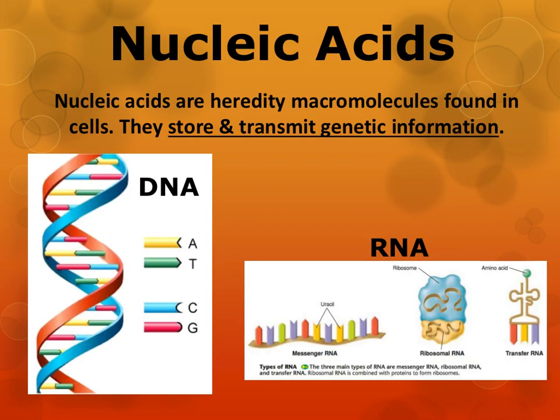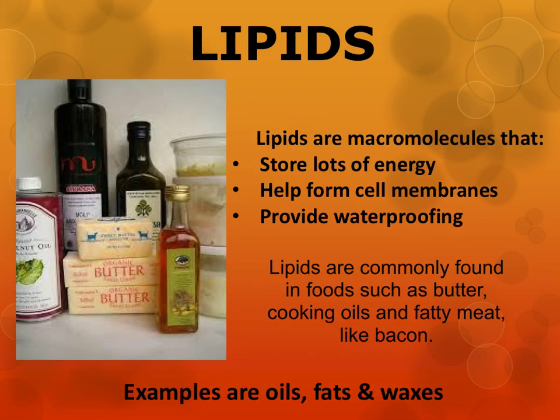Nucleic acids such as DNA and RNA are heredity molecules. In other words, they store and transmit your genetic information. You look like you do because you inherited the DNA of your parents. While proteins, carbohydrates, and nucleic acids are all polymers, lipids are not. They're considered to be a macromolecule, but not built from chains of monomers.